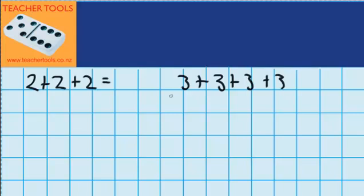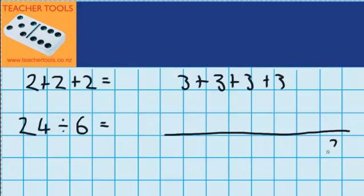Right, here's our first question. Let's start with 24 divided by 6. Let's imagine that on a number line. I'm going to say, starting at 24, and I want to jump back in jumps of 6 and I want to get all the way back to 0.